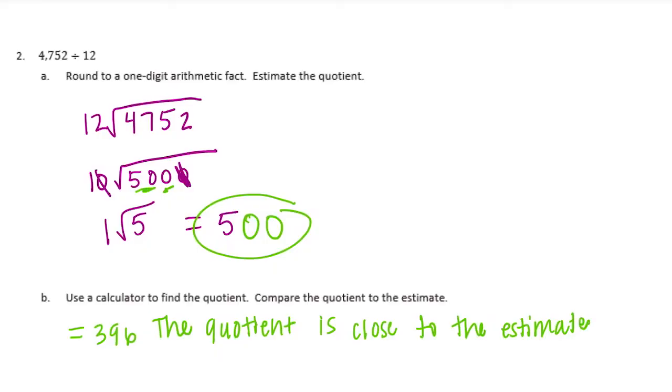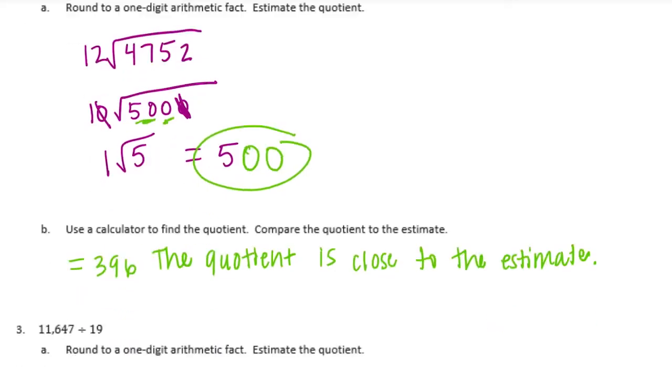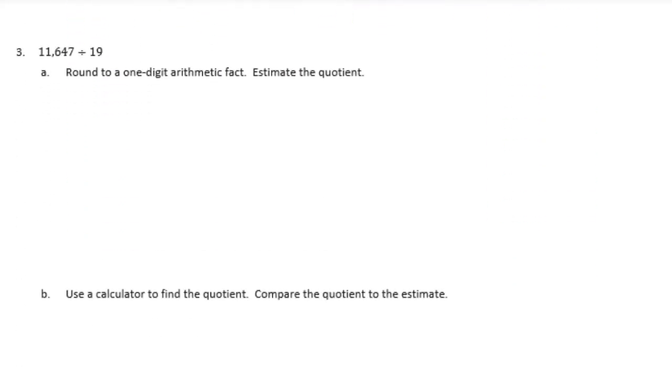396 is pretty close to 500 — not quite as close as the first estimate, but we're not thousands off. I would say the quotient is close to the estimate.